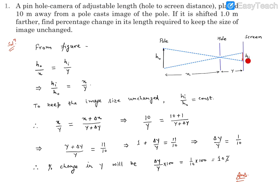Let's consider the distance of the object, that is the pole with the hole, is x, and the distance between hole and the screen is y. So this entire is the camera and this is the distance of the object.